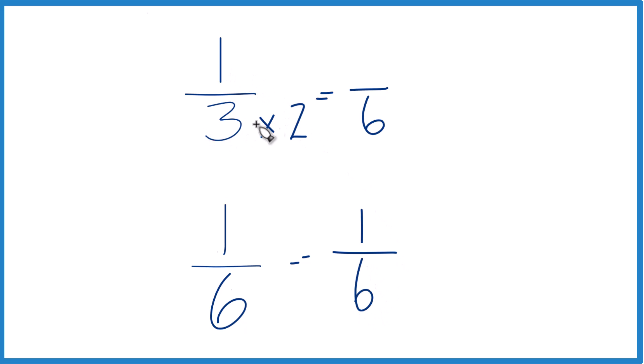Over here, since we multiplied the denominator by 2, we do need to multiply the numerator by 2. 2 over 2 is 1. So, we just multiplied by 1. We just changed the way it looks, not the value. 1 times 2 is 2.